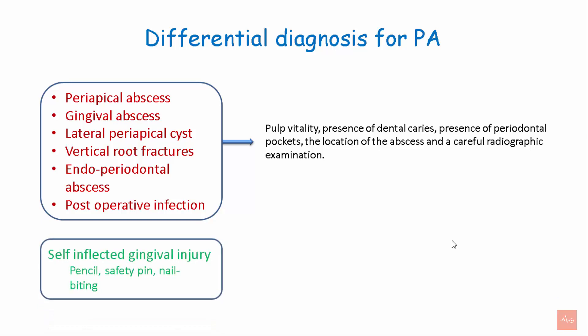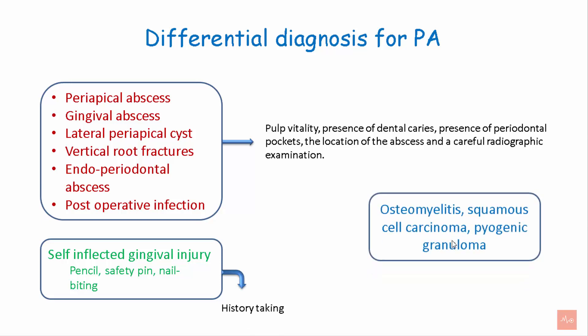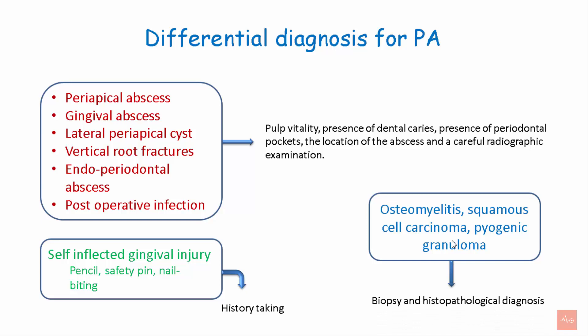Self-inflicted gingival injuries due to pencil, safety pin, and nail biting can lead to gingival abscess. These can be differentiated from periodontal abscess by proper history taking. Certain major complications like osteomyelitis, squamous cell carcinoma, and pyogenic granuloma can be differentiated from periodontal abscess by performing biopsy and histopathological diagnosis.